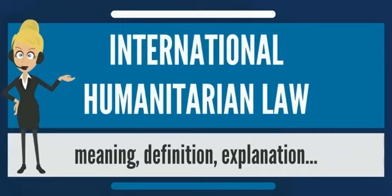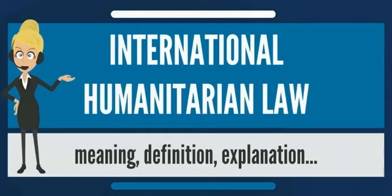The relationship between international human rights law and international humanitarian law is disputed among international law scholars. This discussion forms part of a larger discussion on fragmentation of international law. While pluralist scholars conceive international human rights law as being distinct from international humanitarian law, proponents of the constitutionalist approach regard the latter as a subset of the former. Those who favor separate, self-contained regimes emphasize the differences in applicability — international humanitarian law applies only during armed conflict. A more systemic perspective explains that international humanitarian law represents a function of international human rights law.